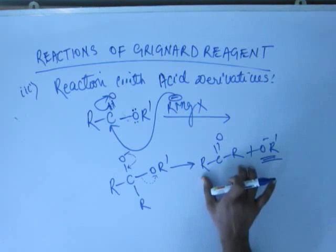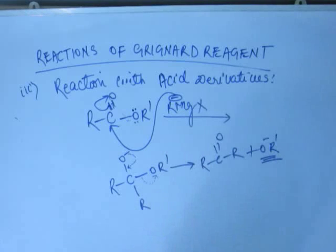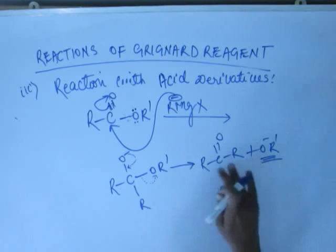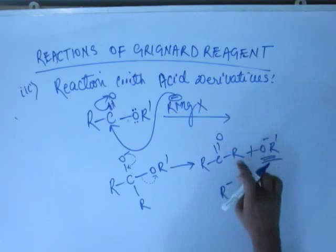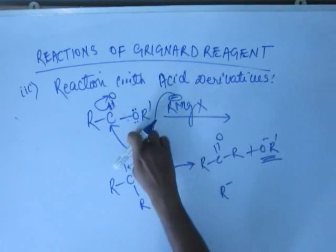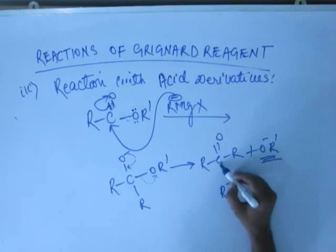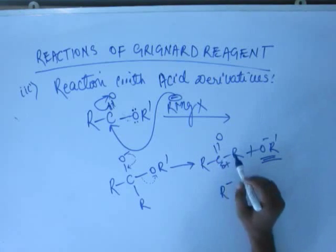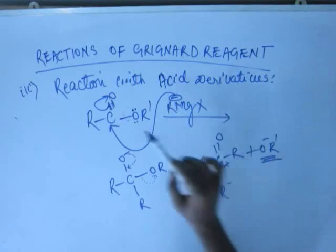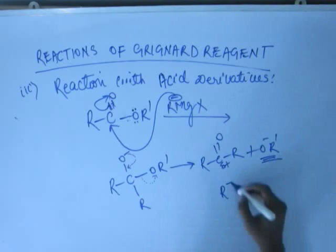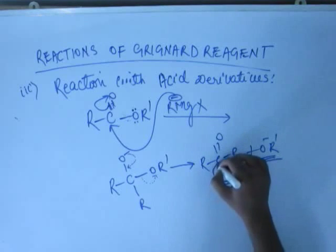Once this ketone is formed, it cannot remain as it is whenever Grignard reagent is present. This R minus is again unstable and will come and attack more rigorously. This ketone does not have a plus M effect from its R group as it had in the case of ester — in ketone, you only have a weak inductive effect stabilizing the delta-plus charge on carbon. So this ketone is far more reactive than ester and will react at an even higher rate.